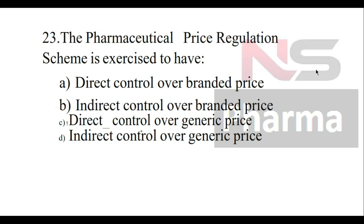Question number twenty-three: The pharmaceutical price regulation scheme is exercised to have — Option A: Direct control over branded price, Option B: Indirect control over branded price, Option C: Direct control over generic price, Option D: Indirect control over generic price. The answer is indirect control over branded price.